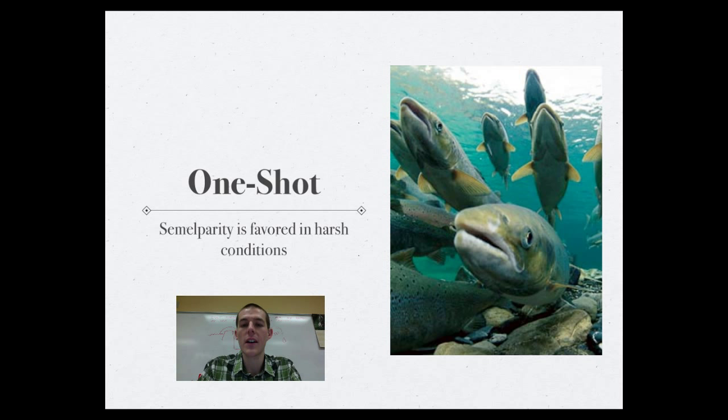So animals that show semelparity, basically what they do is they reproduce one time in their life, and they have a ton of offspring. A couple of examples. Got the salmon right there. Salmon are born at the headwaters of a stream, then they usually migrate to the open ocean, spend one to four years maturing in the ocean, then they will return to their place of birth, lay thousands of eggs, and die. So those thousands of eggs are their one shot.